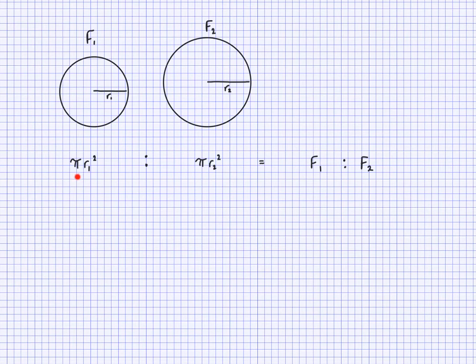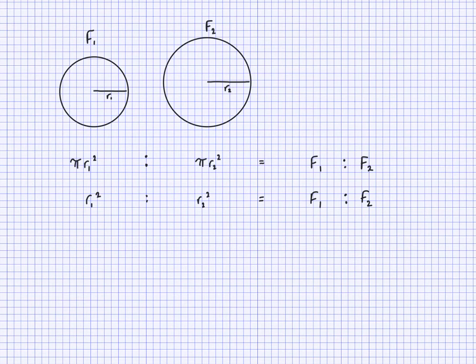This ratio can be simplified by dividing both sides by π, giving R1² to R2², and that is also equal to F1 to F2. So the squares of the radii are proportional to the frequencies.